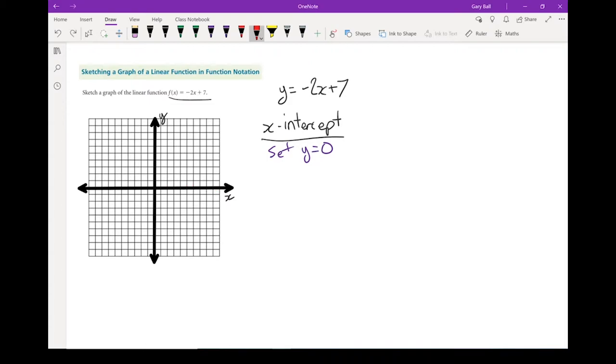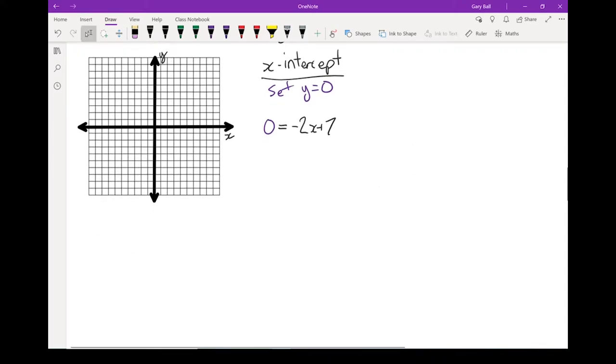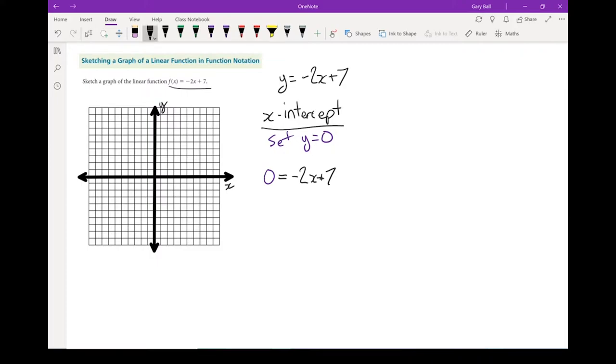So if I'm going to solve for my x-intercept, I'm going to start by setting y equals zero. Because it doesn't matter where it is on that x-axis, the y-coordinate of all of those points is zero. So I'm going to take my equation, and instead of the y, I'm going to put a zero in. So zero equals negative 2x plus 7.